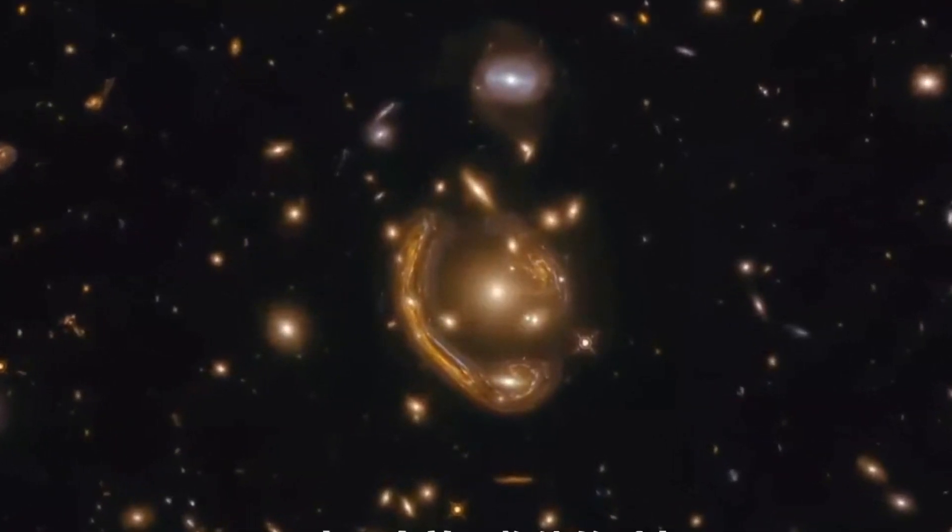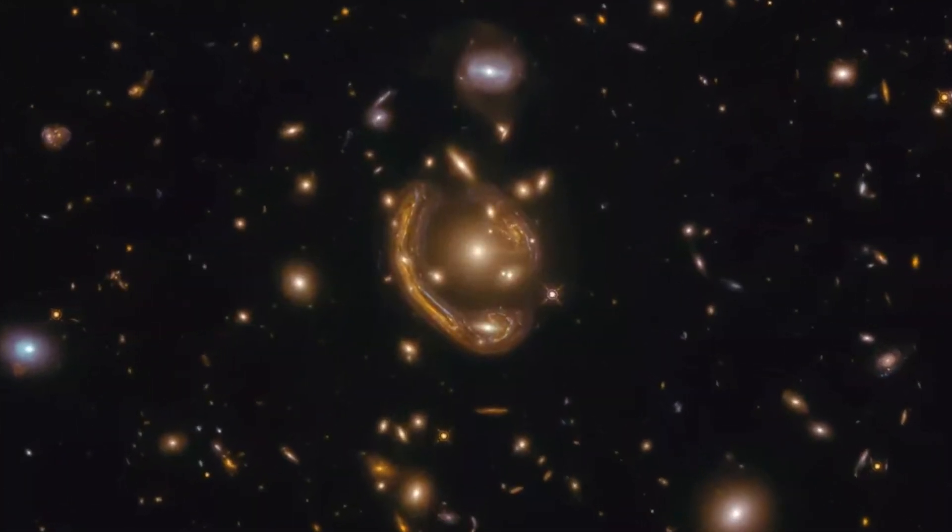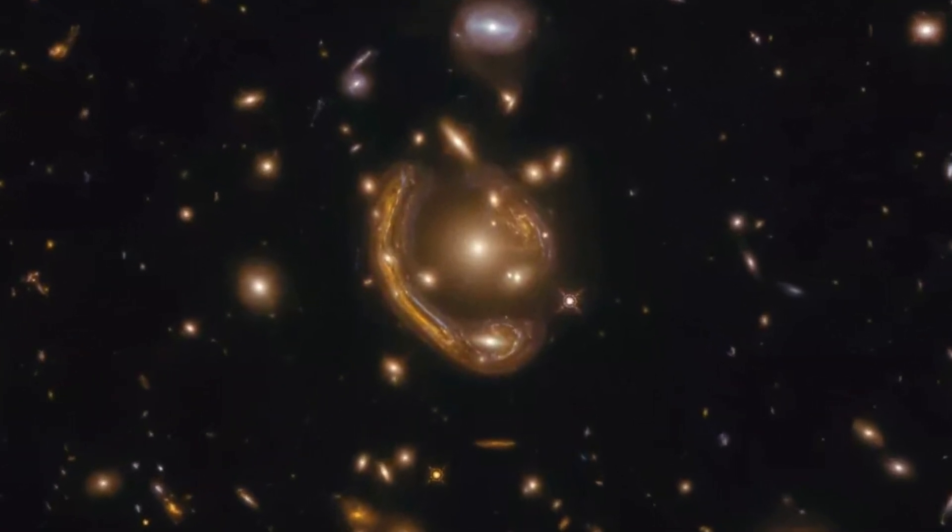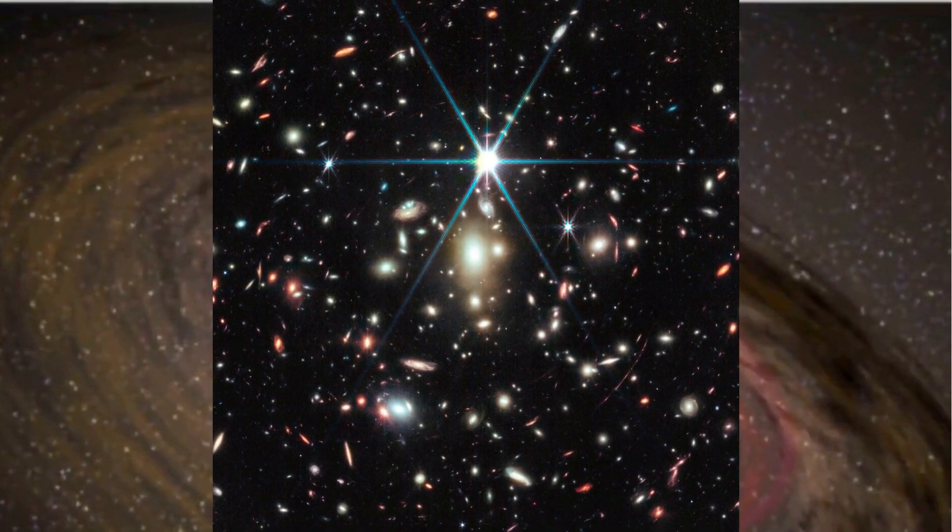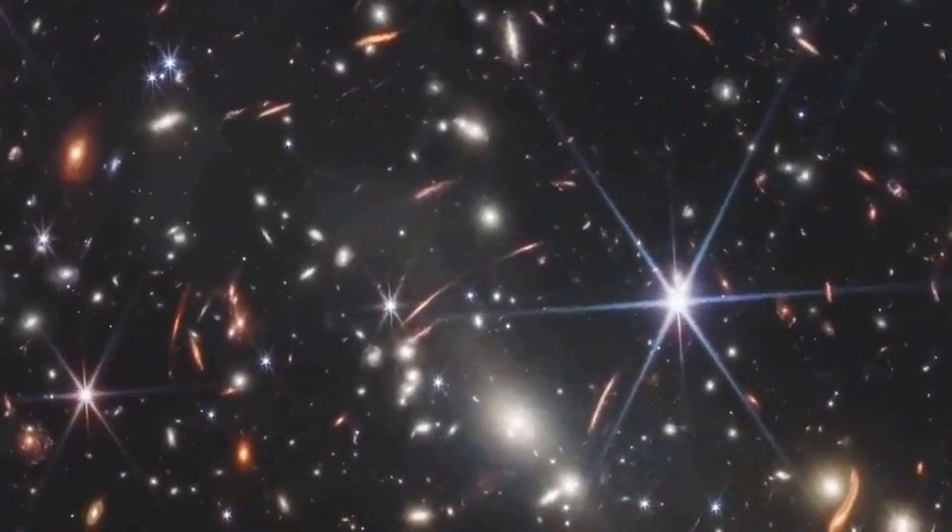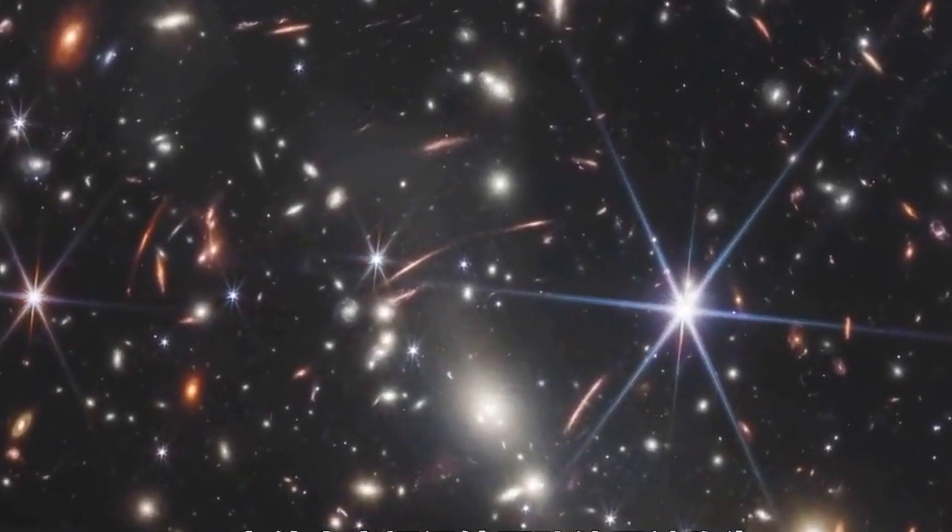Exploiting this effect, the JWST team focused on Earendel using the gravitational warping generated by a galaxy cluster called WHL0013708, aligning the telescope's line of sight with the distant star.